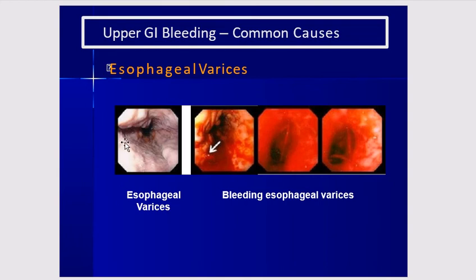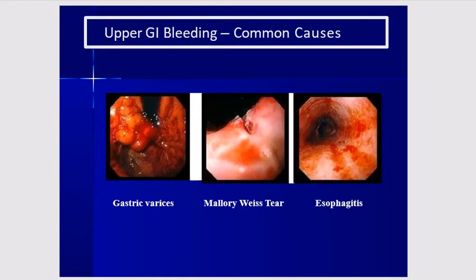This is how varices look: on the left, they are not bleeding; on the right, they are bleeding. This is a Mallory-Weiss syndrome, and this is esophagitis as seen endoscopically.